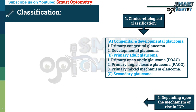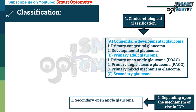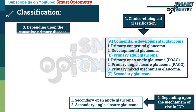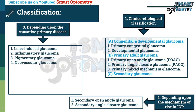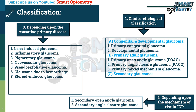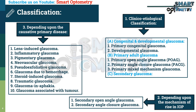Depending upon the mechanism of rise in IOP: 1. Secondary open angle glaucoma, and 2. Secondary angle closure glaucoma. Depending upon the causative primary disease: lens-induced glaucoma, inflammatory glaucoma, pigmentary glaucoma, neovascular glaucoma, pseudo-exfoliative glaucoma, glaucoma due to hemorrhage, steroid-induced glaucoma, traumatic glaucoma, glaucoma in aphakia or pseudophakia, and glaucoma associated with tumor.